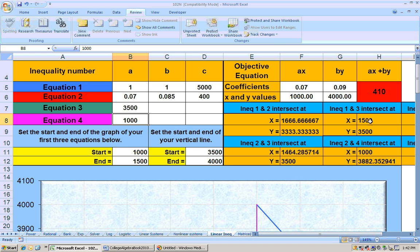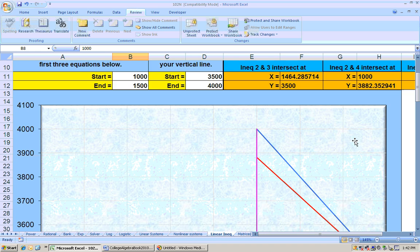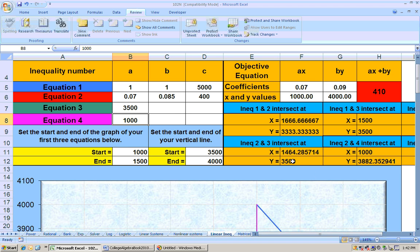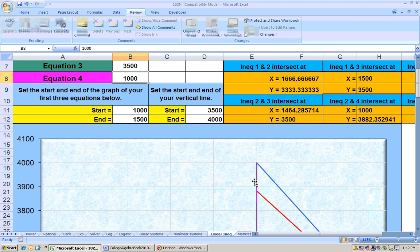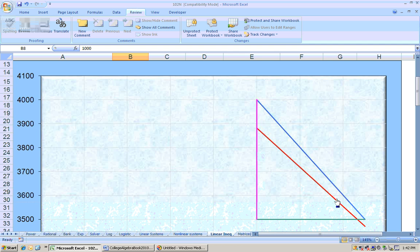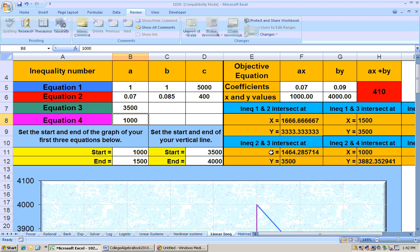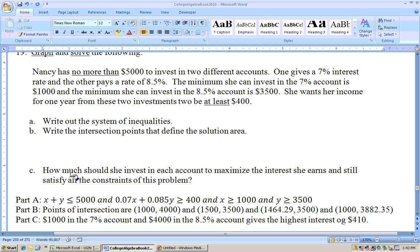Blue and green would be, for example, the first and the third. And the first and third is at (1500, 3500). And red and green is my second and third, which is right here at this amount. And then finally, red and pink is the last one that defines the solution area. The solution area is this kind of weird shape right here. And so the red and pink would be the 2 and 4, which is (1000, ...). Now, we got the points of intersection that says, how much should she invest in each account to maximize her interest? Well, put the most she's allowed to into the highest percentage account.